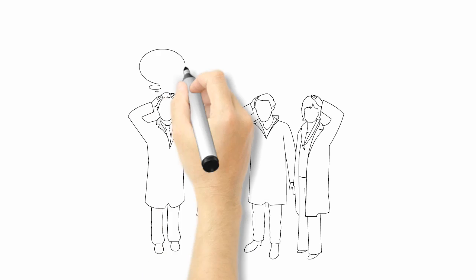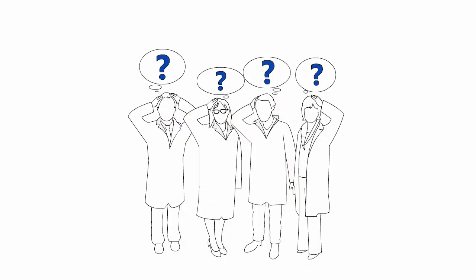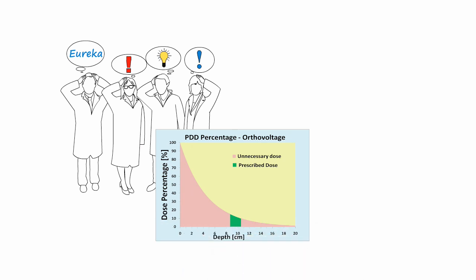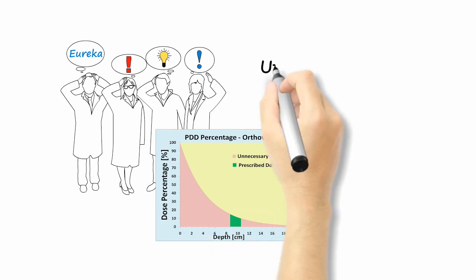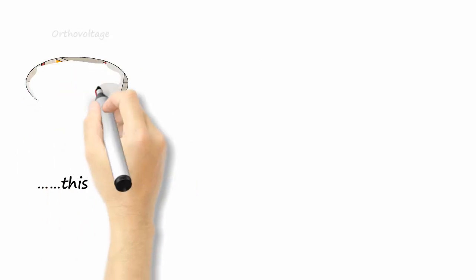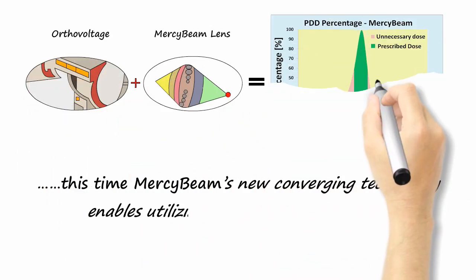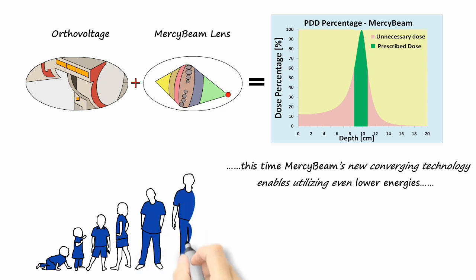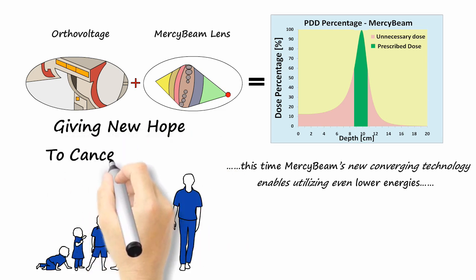MercyBeam is a sophisticated technology to efficiently converge low-energy X-ray. MercyBeam brings life back to orthovoltage, a low-energy radiation which was utilized until about 20 years ago. This time, MercyBeam's new converging technology enables utilizing even lower energies while making treatment more accurate and less harmful to healthy tissue, giving new hope to cancer patients.